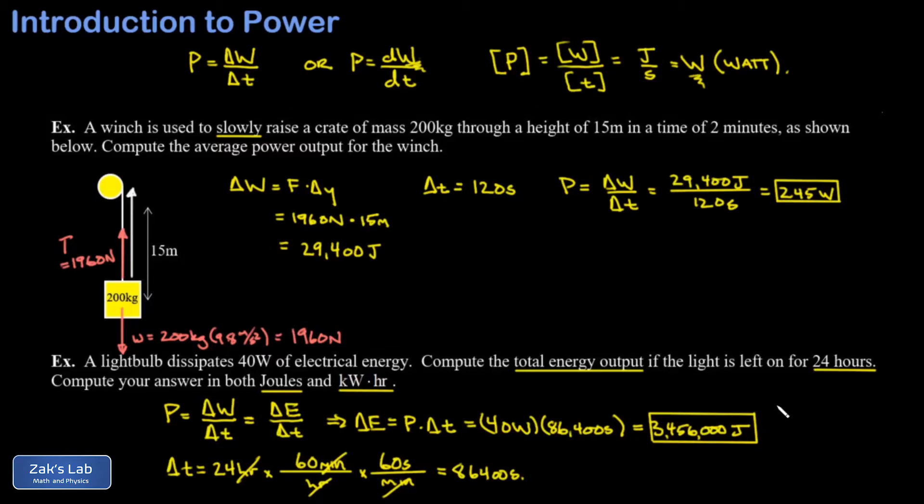What about the conversion to kilowatt-hours? We could figure out a conversion factor between joules and kilowatt-hours, but it's faster to just redo the calculation in kilowatts and hours. 40 watts is 0.04 kilowatts, and we have 24 hours of time.